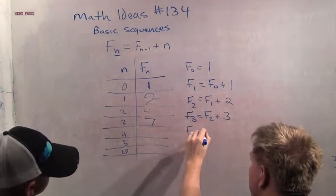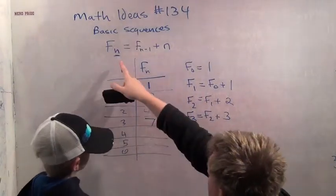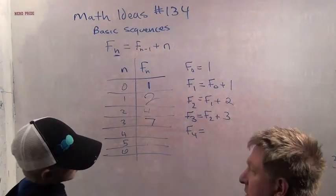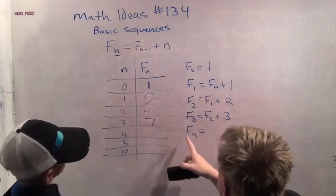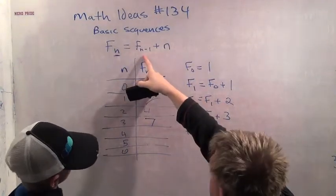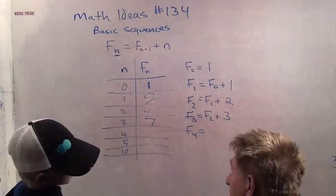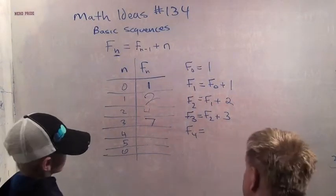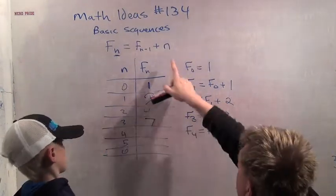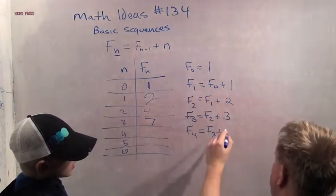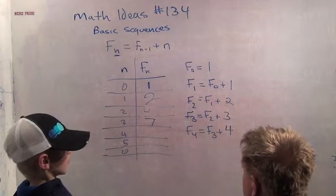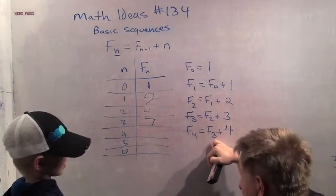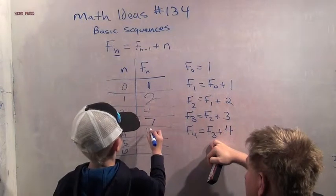Now you tell me, what is the equation for F4? F4 equals... What is n? N is 4. So F sub 4 equals F sub... N minus 1. If n equals 4, what is n minus 1? 3. So F4 equals F3 plus... What's n? N is 4. Plus 4. So what is F sub 3? F sub 3 is 7. 7 plus 4 is? 11. Good job.